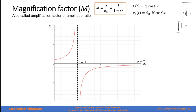The magnification factor M equals 1 over (1 minus r squared), where r is the frequency ratio — the excitation frequency divided by the natural frequency. When r equals 1, meaning the excitation frequency equals the natural frequency, the denominator becomes 1 minus 1, which is zero, making the magnification factor go to infinity. Therefore the response also goes to infinity.